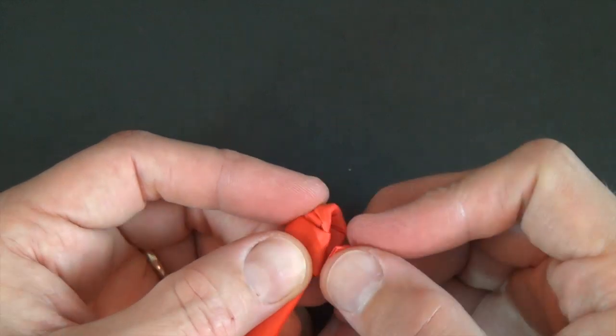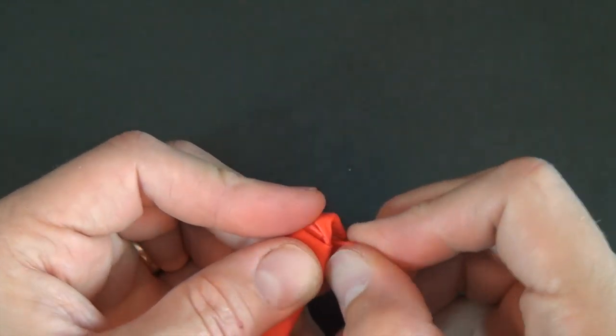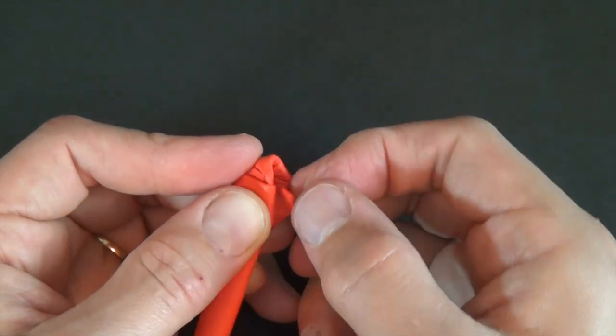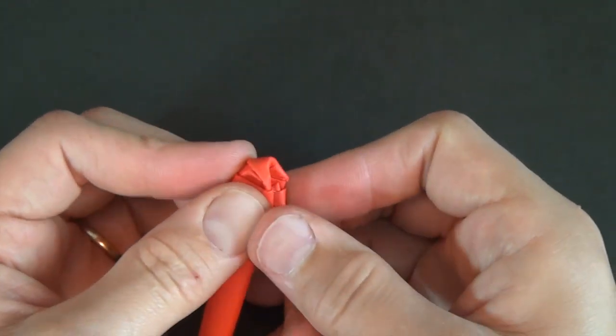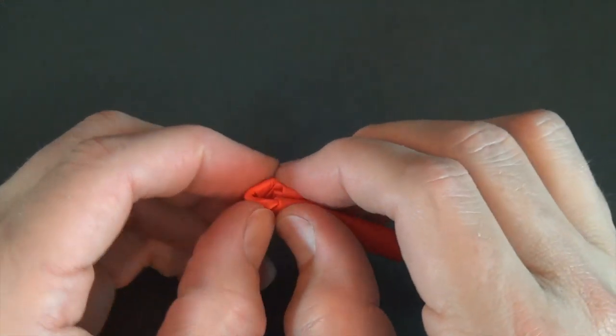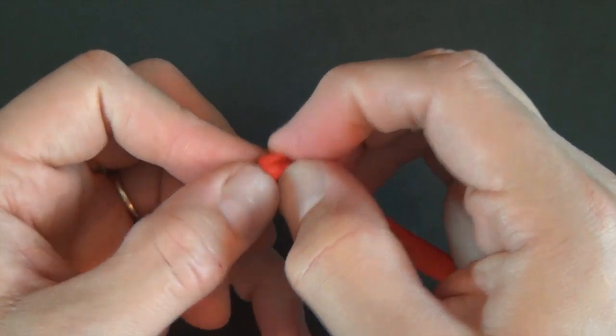Let's first put this corner in like that. And any remaining part just fold that in too. And now you just want to really flatten this down. Squeeze it. You might want to bite it.